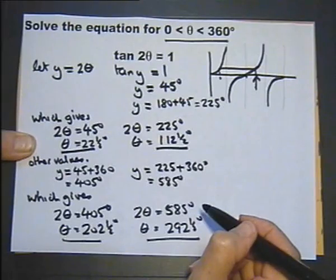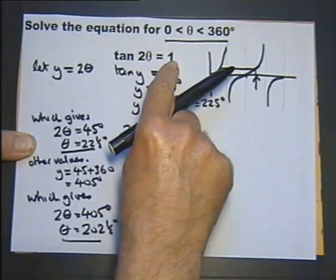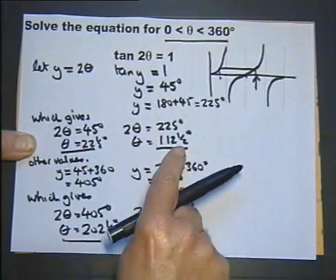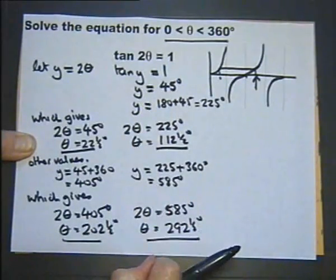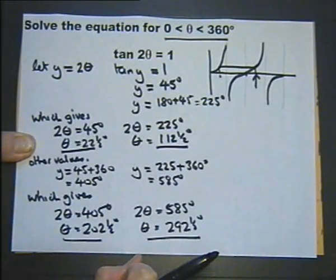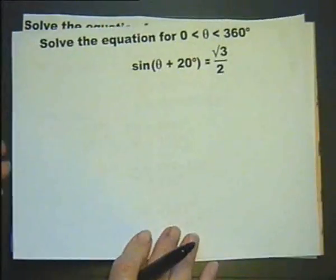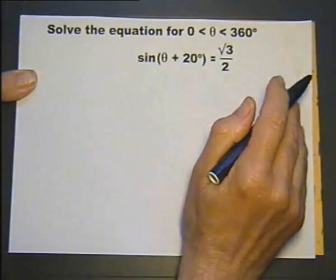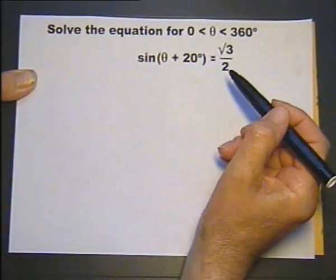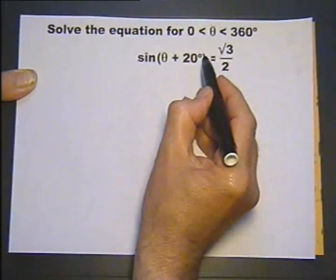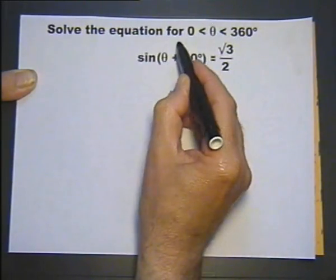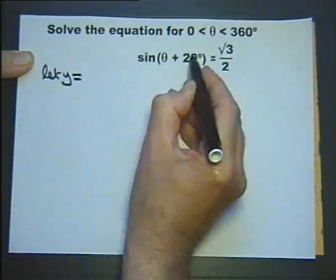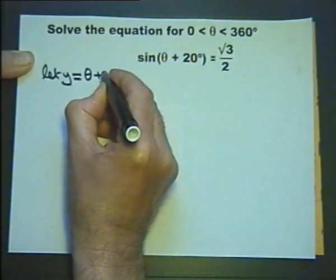All of these answers you could check using a calculator — substitute back into the equation and the tan of 2 times each answer should come to 1. So with a calculator it would be not too difficult to check that these are correct. Now let's move on to an equation looking a bit more difficult. We're going to solve this equation for values of theta between 0 and 360 degrees, simplifying by substituting for this piece of information using y, so let y equal theta plus 20 degrees.